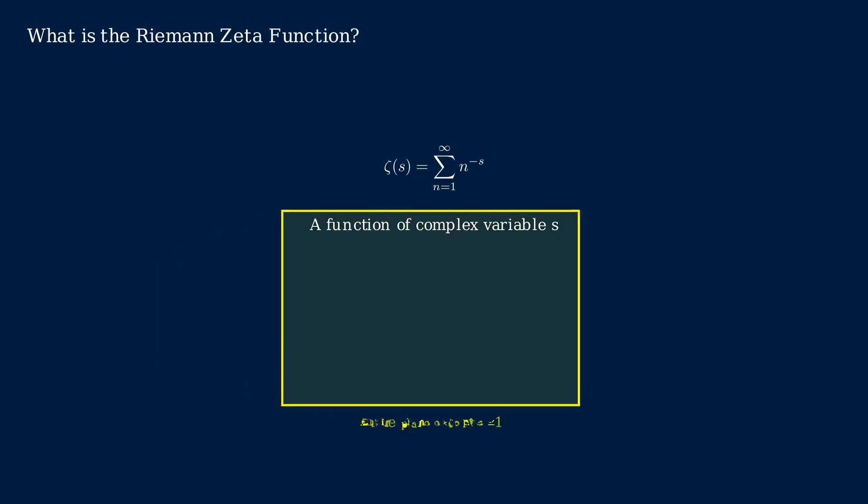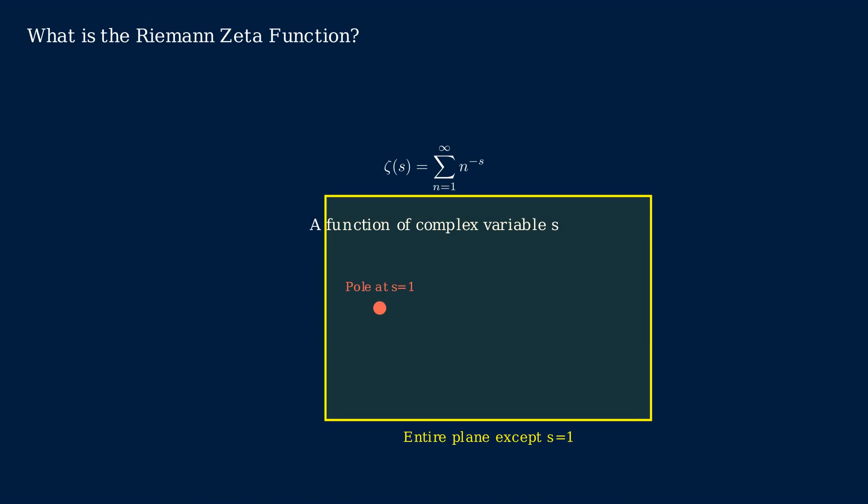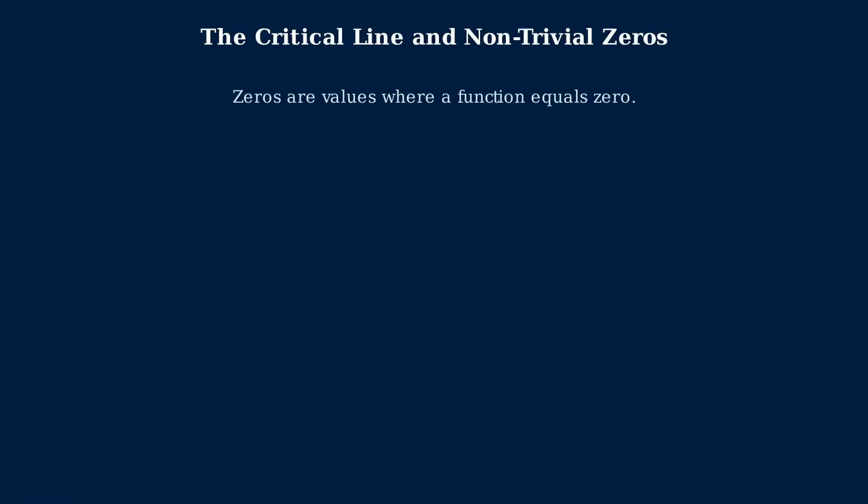The magic happens when Riemann extended this function to the entire complex plane, except for s equals 1. This analytic continuation reveals deeper connections to prime numbers. Through this extension, the zeta function uncovers the hidden patterns behind prime numbers, linking complex analysis to the fundamentals of arithmetic. The zeros of a function are the values where that function equals zero.